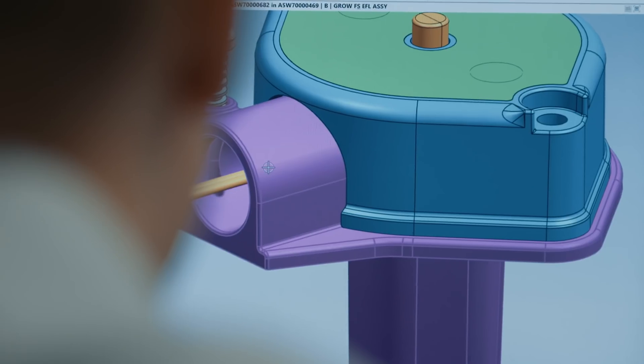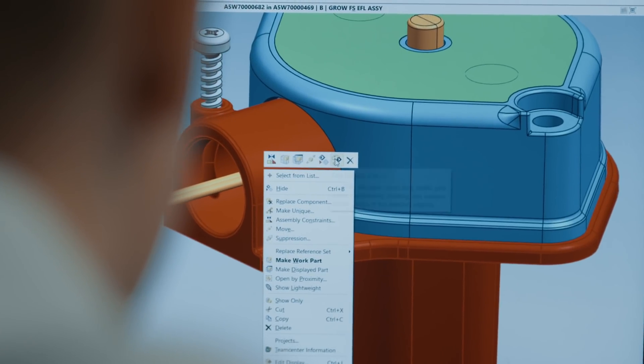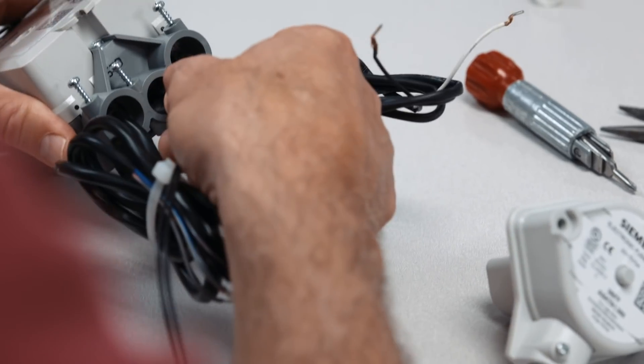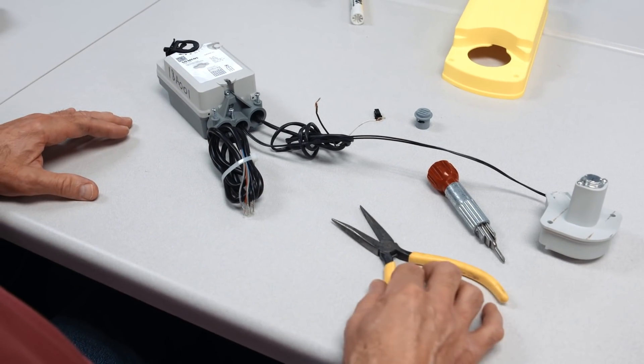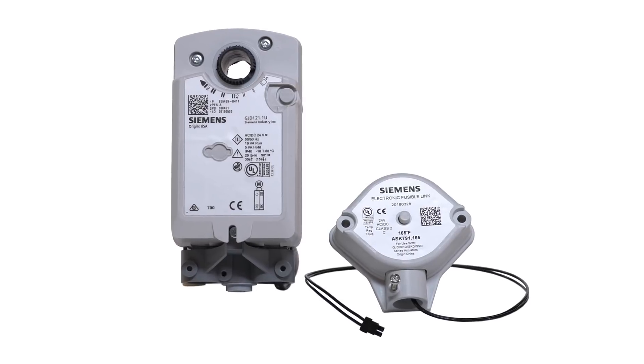The main benefit from this actuator line is integration. There's no having to custom fabricate anything on their end. It's just plug and play. We introduced the GJD for smaller ducts. The GVD will be the most powerful fire and smoke damper actuator on the market.